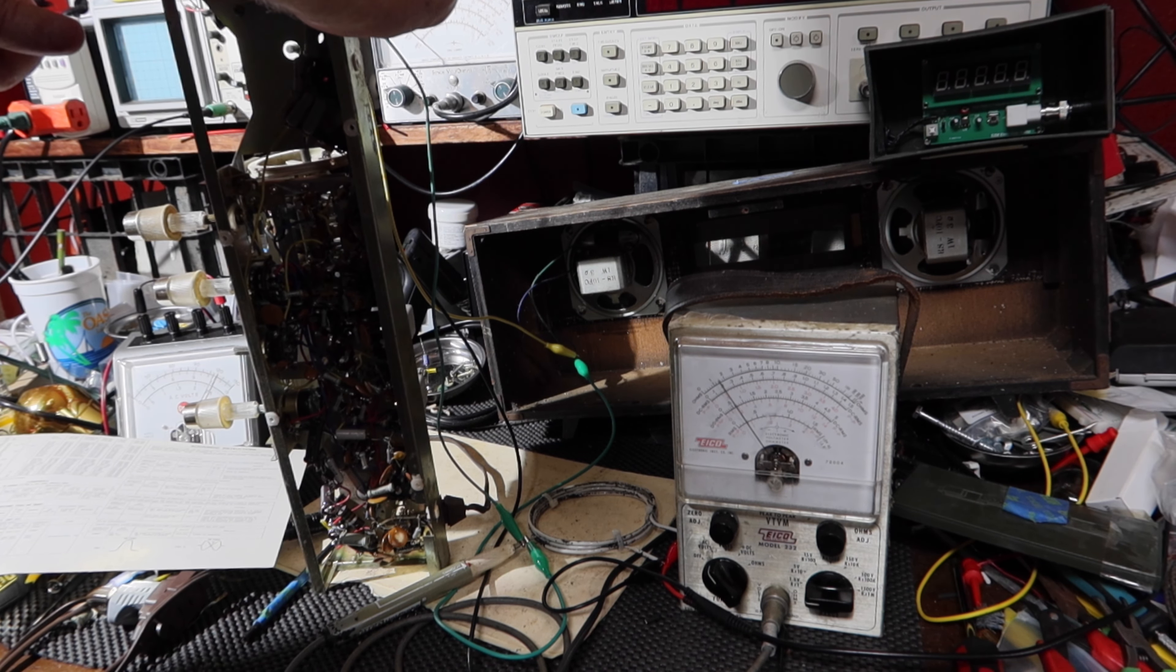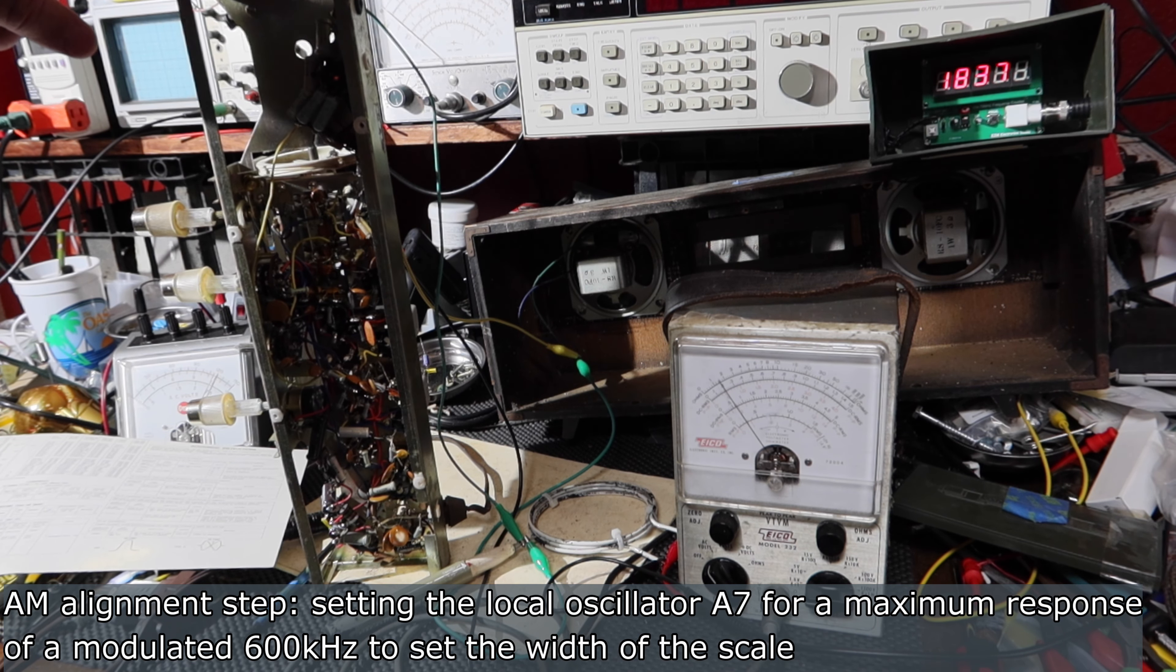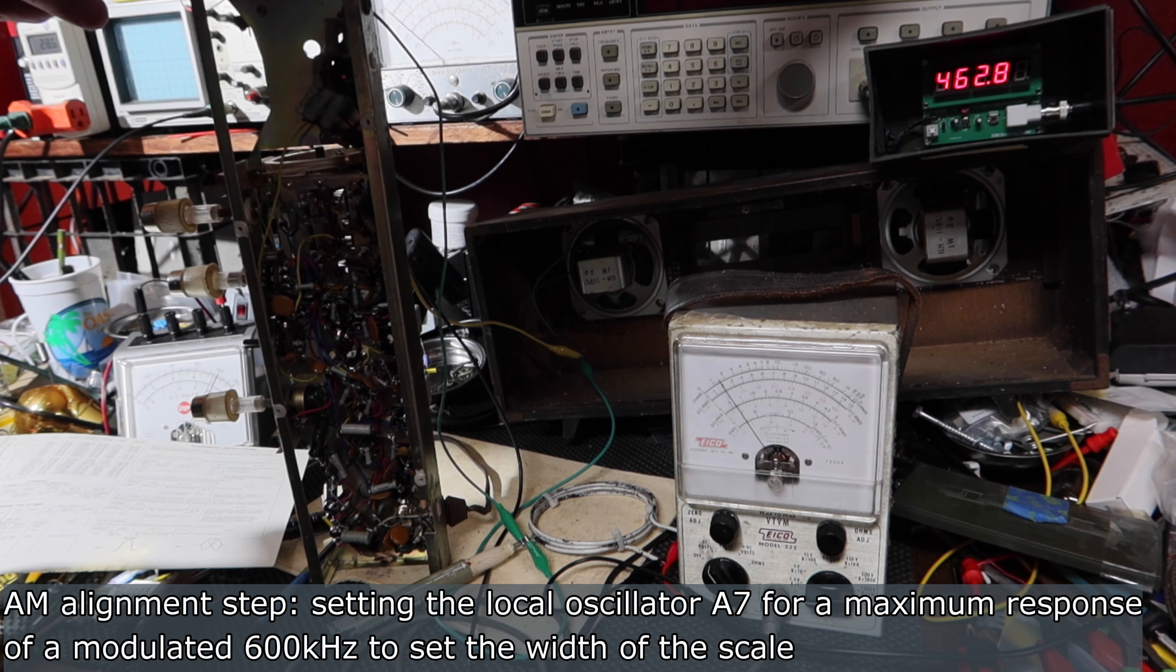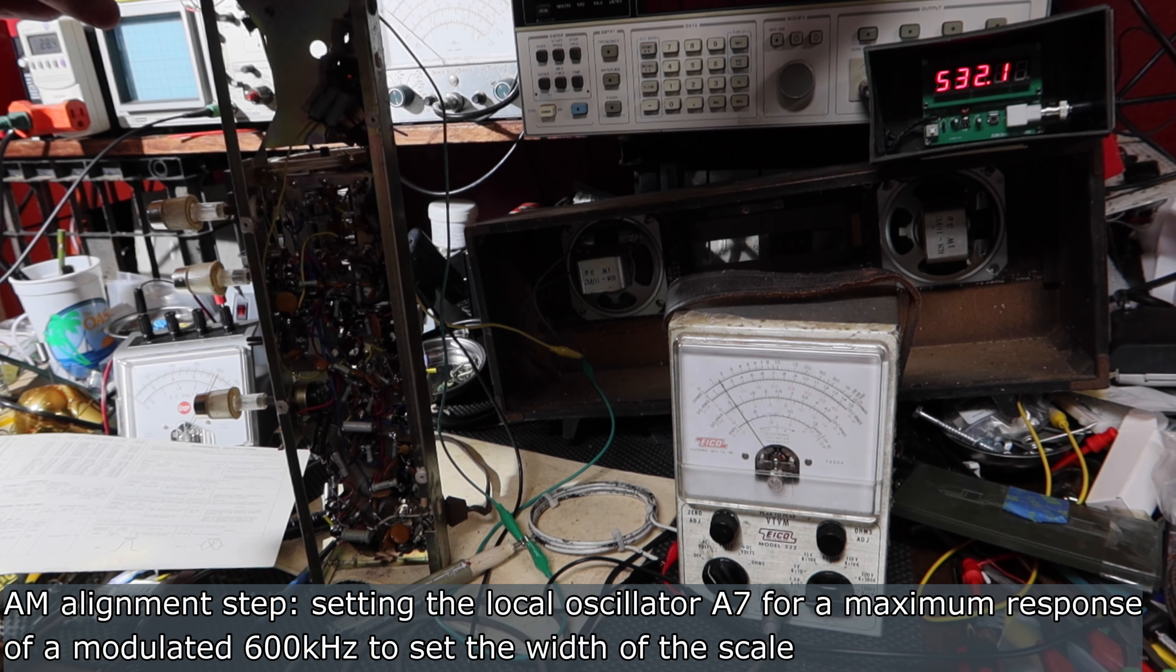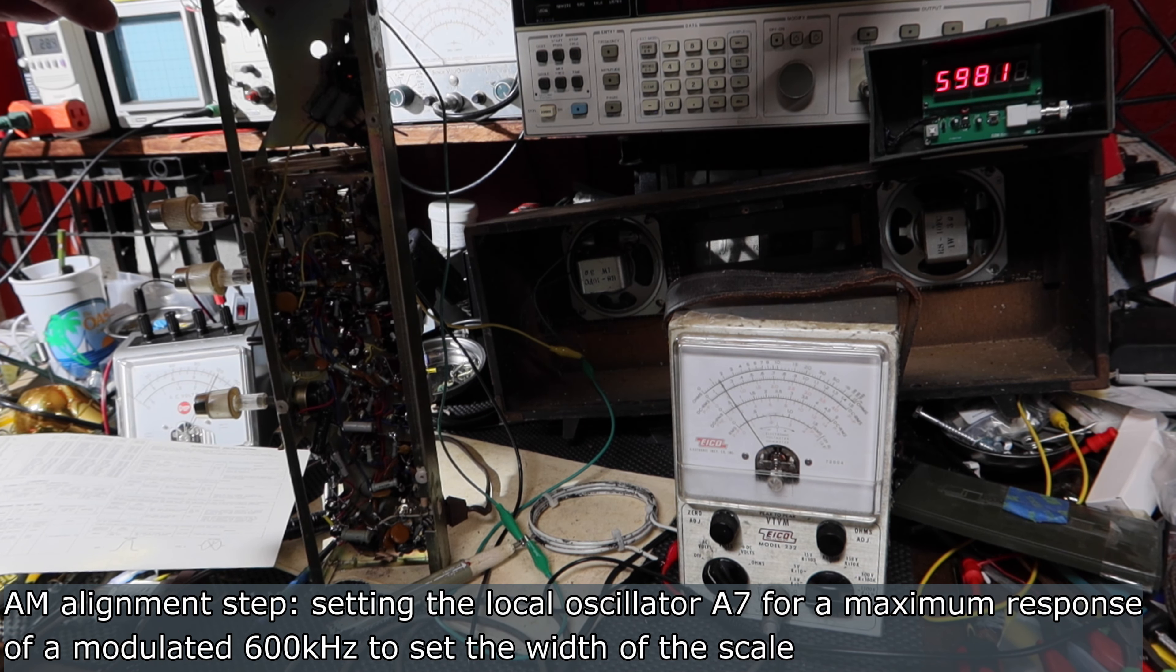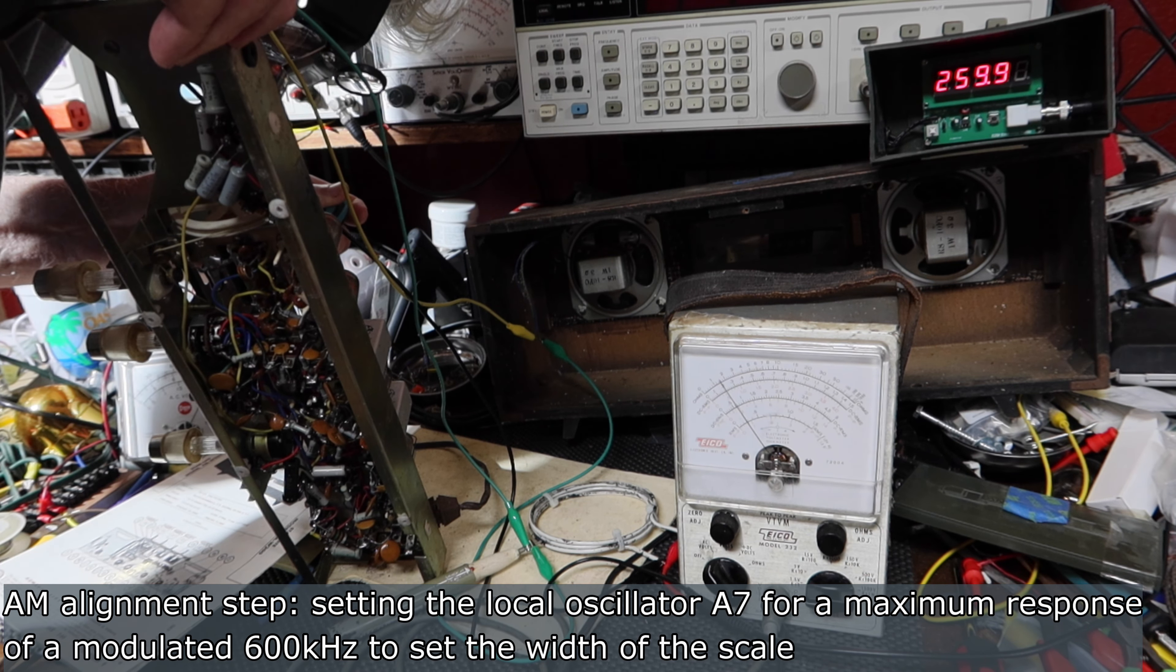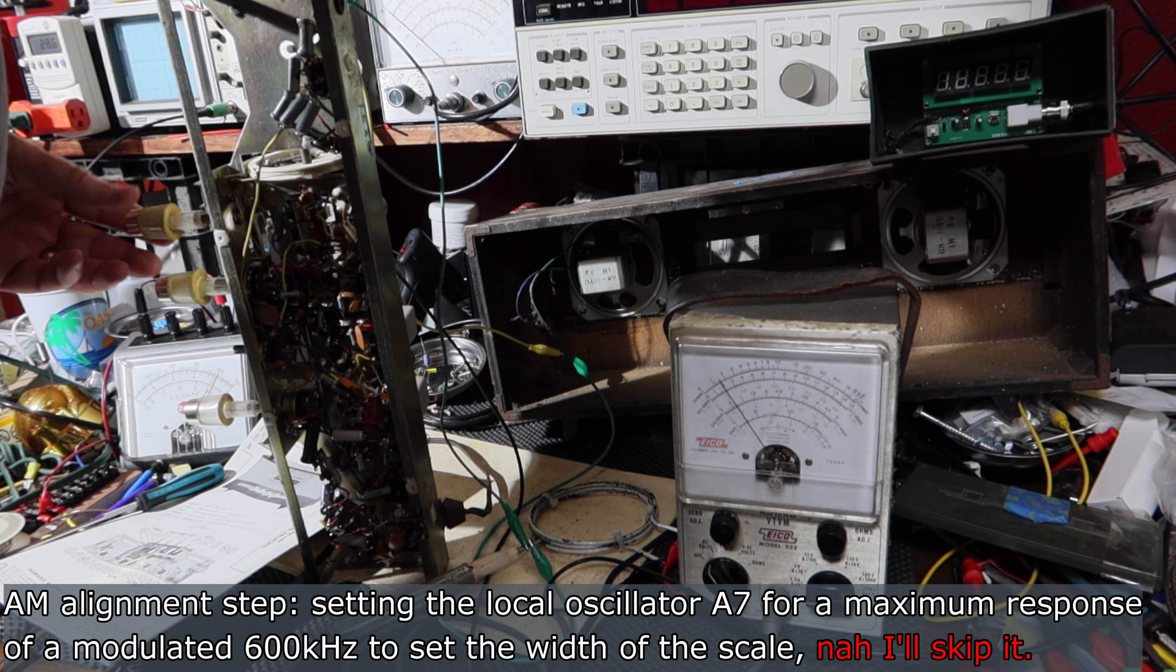All right, then what we do is we go down to 600 kilocycles. So now we're looking for 600 kilocycles here. I guess we're going to set the bottom of the band. But you know what, I'm probably not going to adjust it because I can see the pot in there and they've got some kind of silicone gel all over it or something. And if that's the case, I'm not going to try to force it. I'll see if it'll budge, but if not, I'm not going to mess with it. That screw ain't budging. I'm not going to risk breaking it. I think that's fine. So that completes the AM alignment.